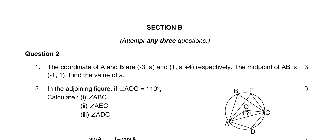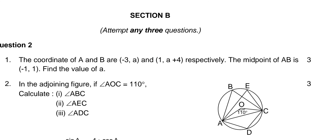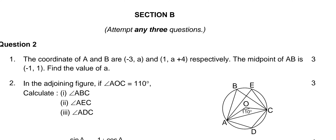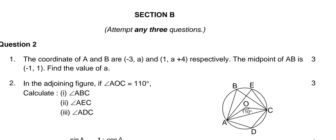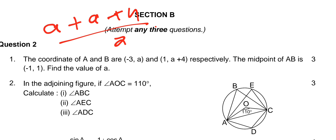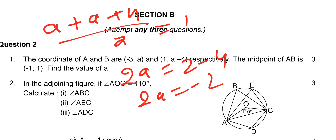Section B, question number 2: coordinates of A and B are (-3, a) and (1, a+4) respectively. The midpoint of AB is (-1, 1). Using the midpoint formula for the y-coordinate: (a + a + 4) / 2 = 1, so 2a + 4 = 2, giving 2a = -2, so a = -1.